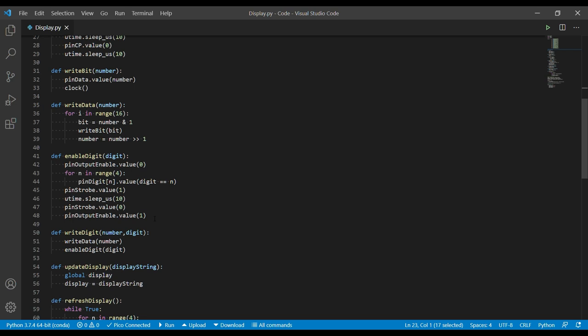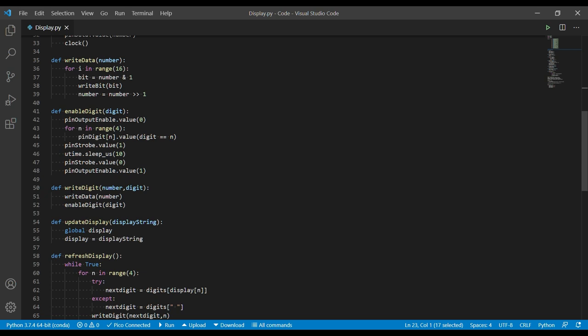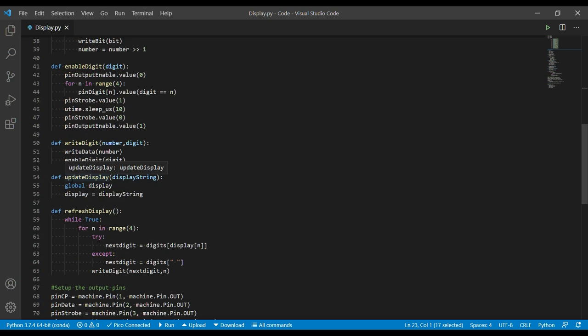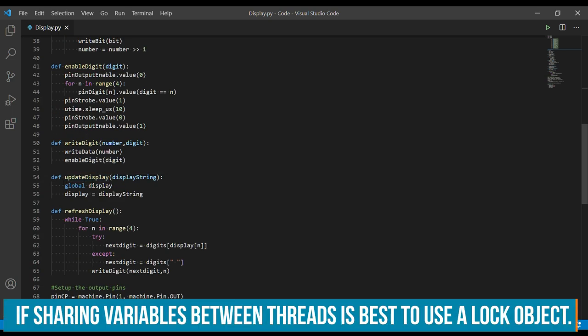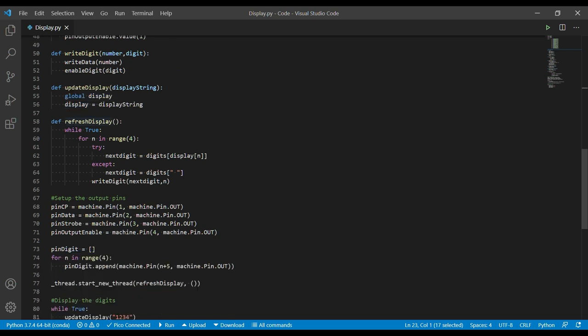So to wrap that all up, we can write a digit by passing a number and its position, so whether it's digit 1 to 4, like 0 to 3 in fact. And then finally a simple routine here. If we're going to update the display, all we're effectively doing is storing a string in our display string. So we'll come back to refresh display in a second and we'll see how that gets called.